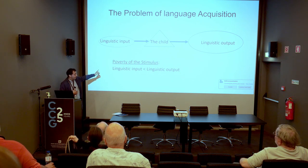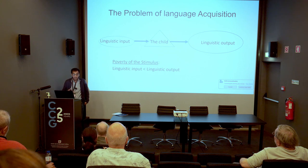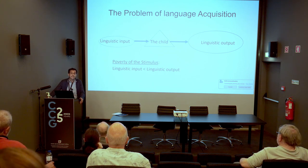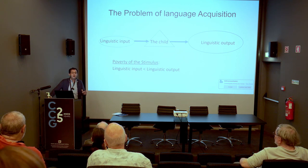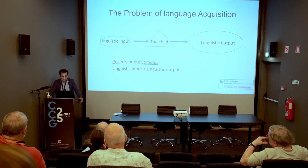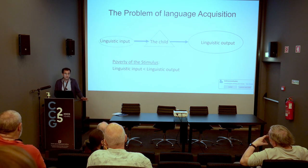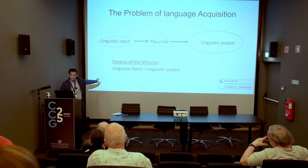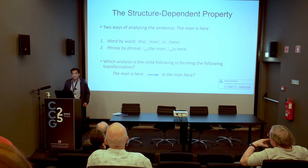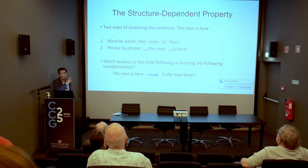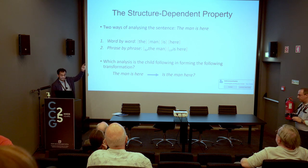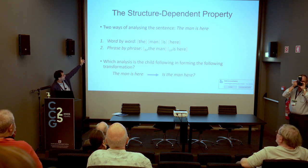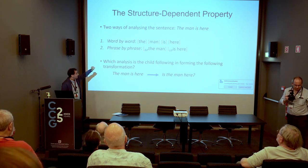This is formulated according to the poverty of the stimulus argument, found in Chomsky 1980. It's an argument which tries to show that much of what children know about their language goes far beyond what their linguistic environment actually justifies. As an example — the exact example Chomsky used in his famous debate with Jean Piaget in 1975 — it concerns the structure-dependent property.